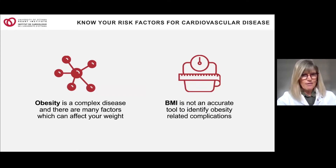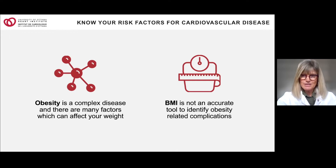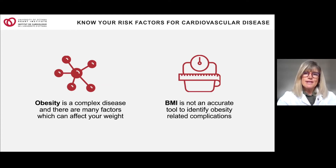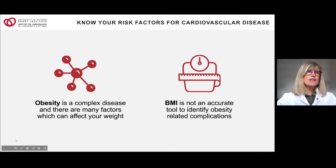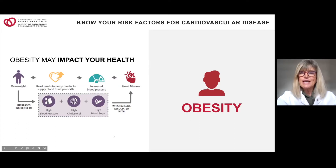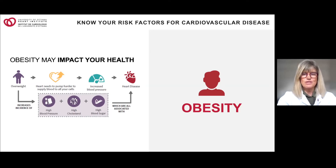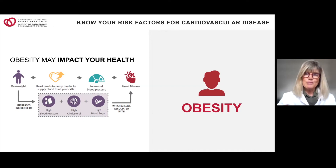Obesity is a very complex disease and many factors can affect your weight. We used to use BMI — a measure of height and weight — but it is not an accurate tool for identifying obesity-related complications. We're trying to move away from the actual weight on the scale to more realistic and positive measures. It's also important where you carry your weight — the apple versus pear analogy. Weight around your abdomen is what we encourage you to work on.